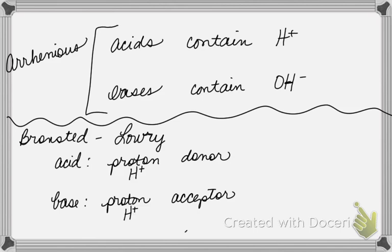According to the Bronsted-Lowry definition, a compound does not have to contain a hydroxide to be classified as a base — all it has to have is a hydrogen. This Bronsted-Lowry concept is what we will be looking at throughout this chapter.